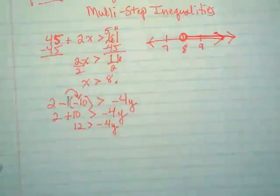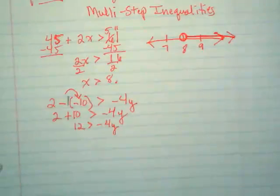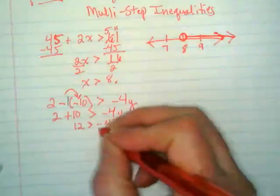12 is greater than negative 4y. Then you divide. We're going to divide by what? Negative 4. And what is our golden rule of inequalities? Flip the symbol. As soon as I'm dividing or multiplying by a negative, the symbol flips.